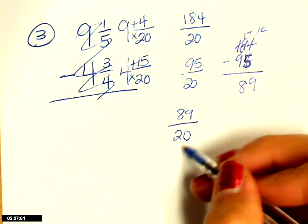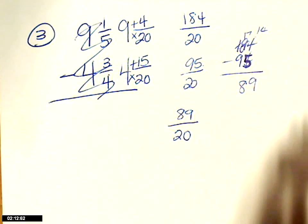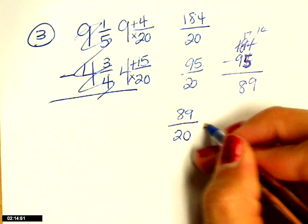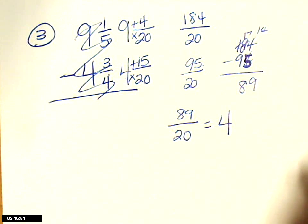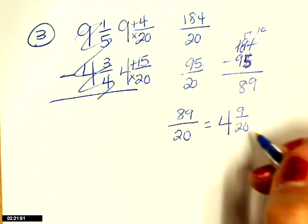This would be okay if you didn't have to simplify, but you do. So 20 goes into 89 how many times? Four whole times, and that's 80, so 9 is left over. 20 is my denominator.